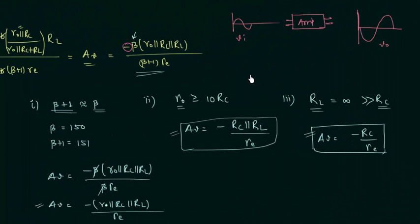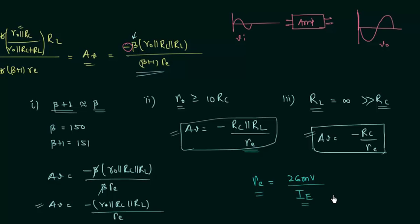To calculate all these parameters, we must know the value of dynamic emitter resistance R_e, which equals 26 millivolts divided by the emitter current I_E. To obtain R_e, we first calculate I_E from the DC equivalent circuit, and then proceed to the AC analysis. This will be clearer when we solve a numerical problem. In the next lecture we will solve one numerical problem based on the R_e model.